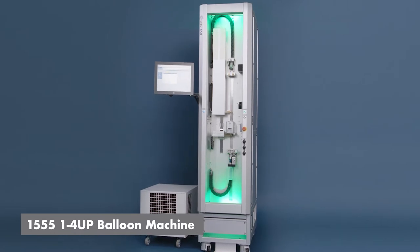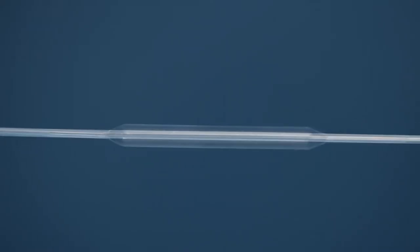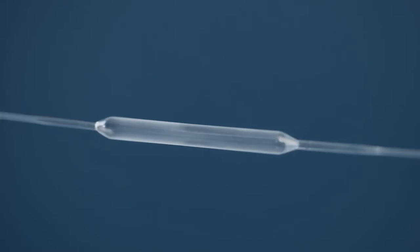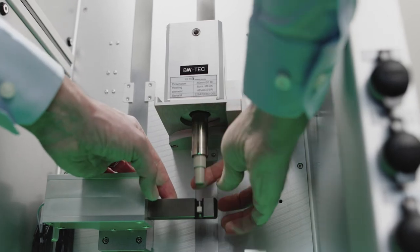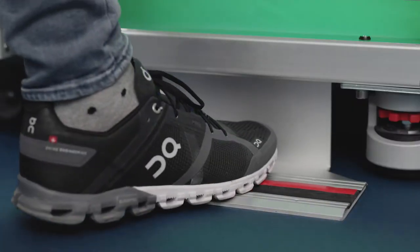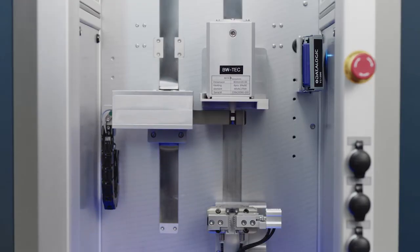The 1555 vertical balloon forming machine is designed to produce a wide range of polymer balloons for angioplasty and other medical applications. The electrically heated stretch blow molding process enables the production of very accurate and repeatable high-quality balloons with tight tolerances in an extensive variety of sizes and shapes.